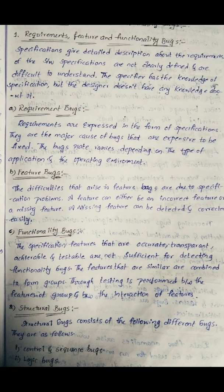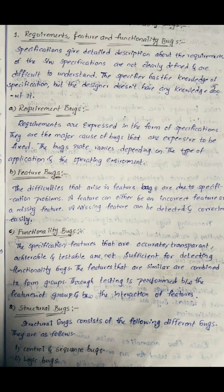Specifications give a detailed description about the requirements that the software needs to design for the customer. When the software specifications are not clearly defined and difficult to understand, and the specifier has knowledge of the specification but the designer doesn't, the designer may include different features. At this point of misunderstanding, requirement bugs arise.